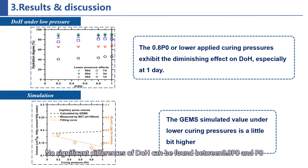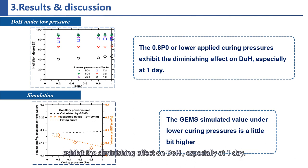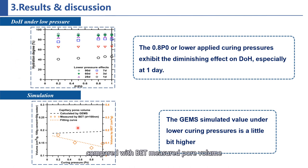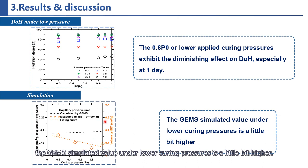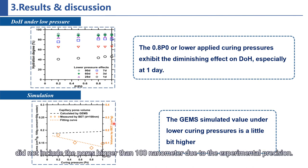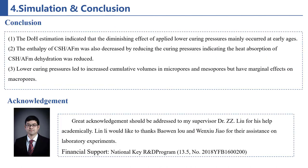This is the degree of hydration under low pressure. No significant differences in degree of hydration can be found between 0.9 standard pressure and standard pressure regardless of the testing age. While 0.8 standard pressure or lower applied curing pressures exhibit a diminishing effect on degree of hydration, especially at one day. The simulation result indicates that compared with BET measured pore volume, the GEMS simulated value under lower curing pressure is slightly higher. The reason may be that the cumulative capillary volume measured by BET did not include pores bigger than 100 nanometers due to experimental precision.